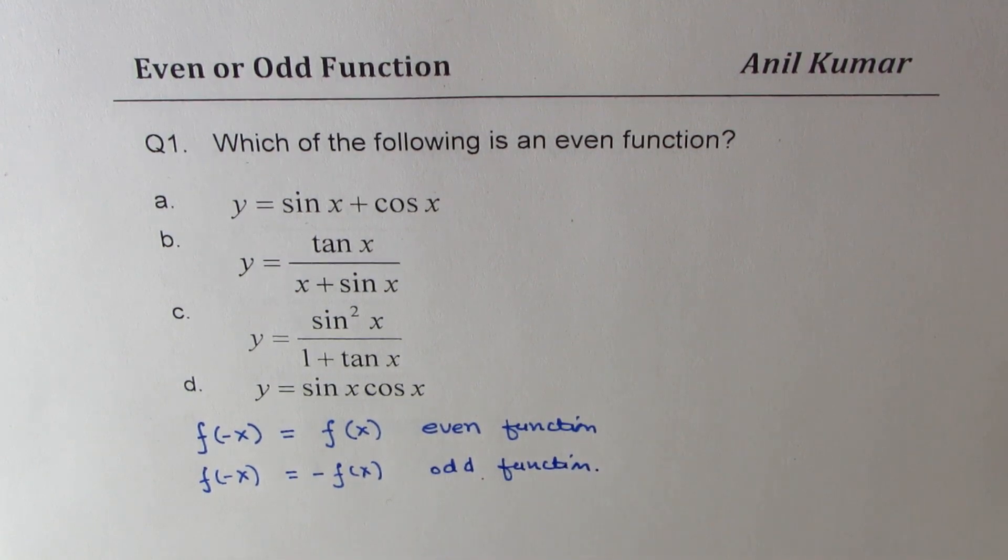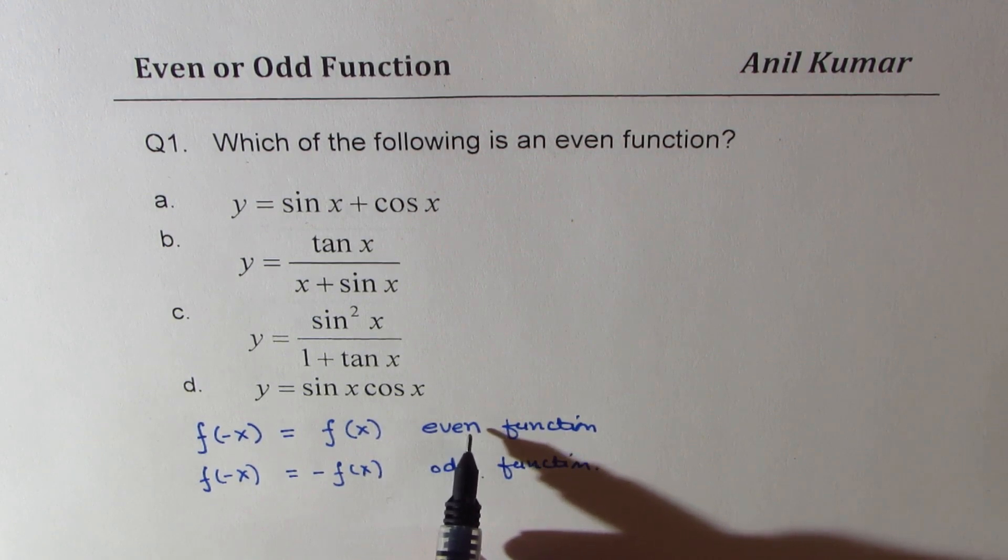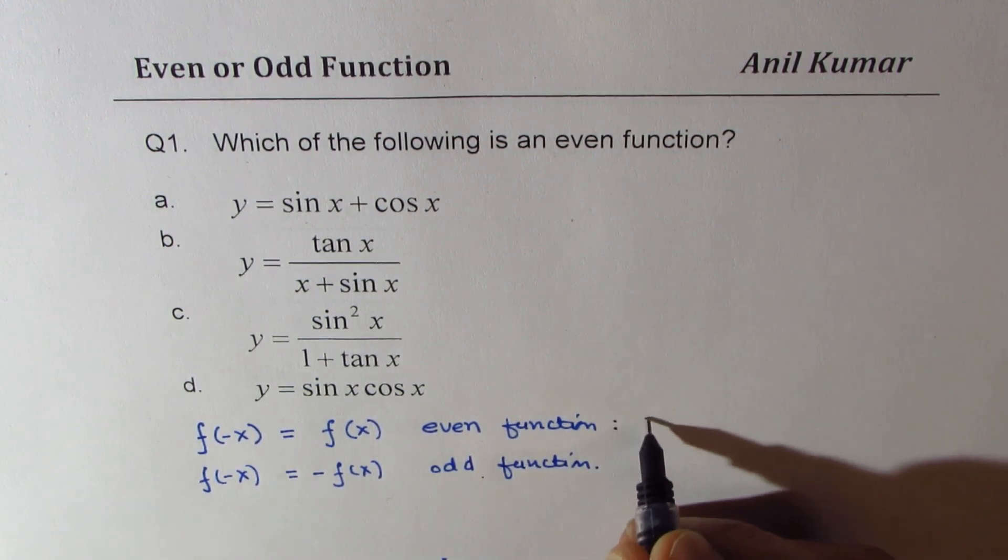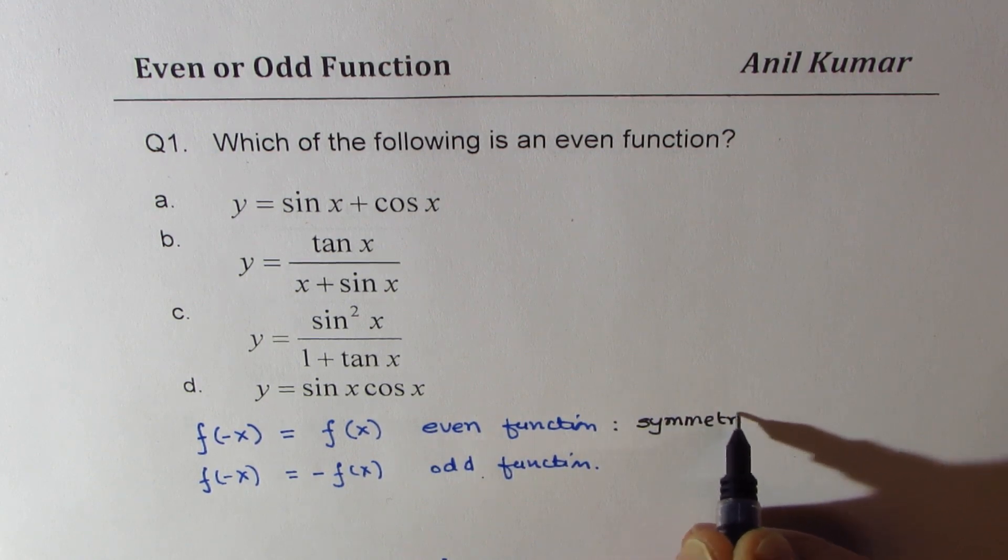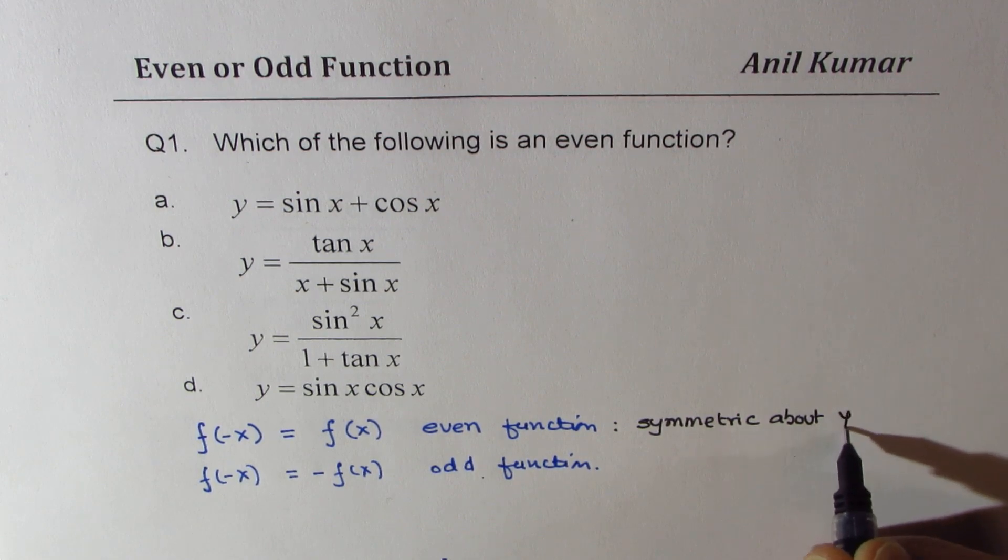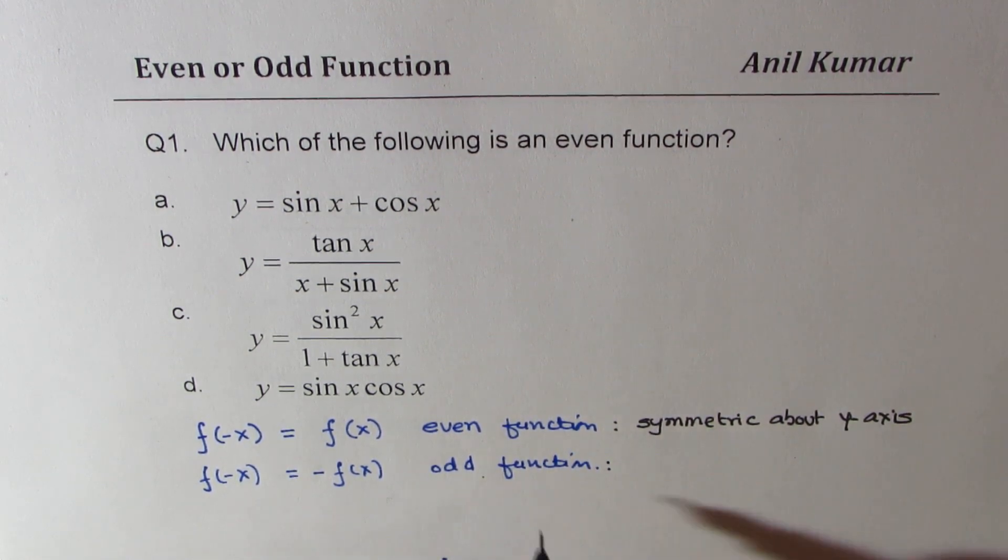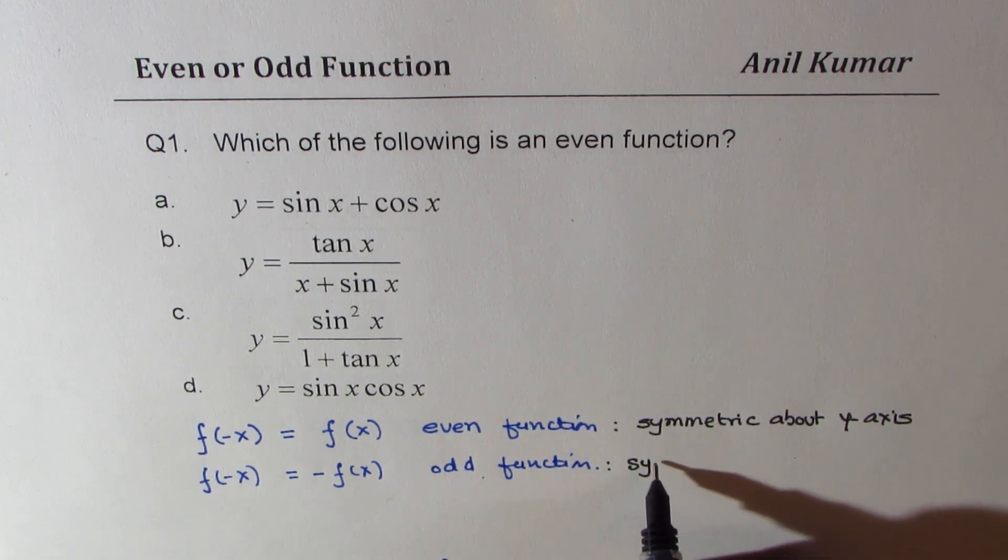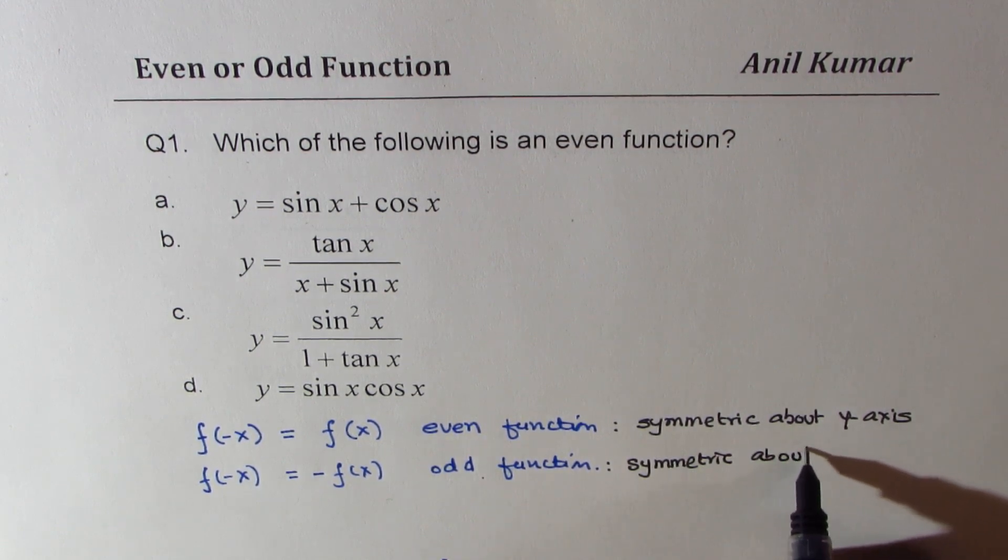So that is the basic. Now as you know, even functions are symmetric about y-axis. And odd functions are symmetric about origin. So they have point symmetry.